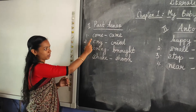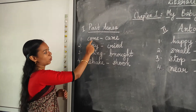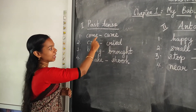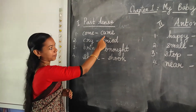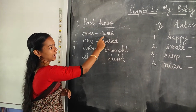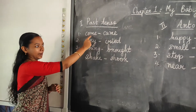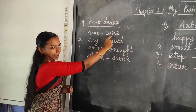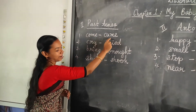First one: come. C-O-M-E, come. The past tense of come is came. C-A-M-E. Come, came.